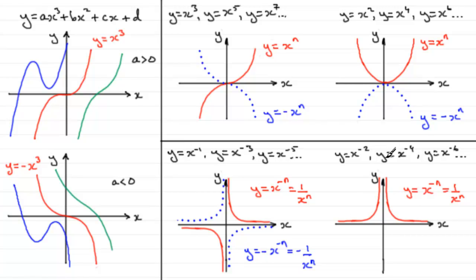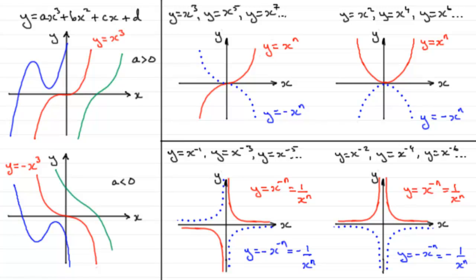And if we put minuses in front of all of them, we get a reflection in the x-axis, giving graphs looking like this — y equals minus x to the power minus n, or in other words minus 1 over x to the power n. Well, that's the selection of graphs for now, and hopefully you'll learn and be able to use these as the basis of transformations of graphs based on these kinds of functions.